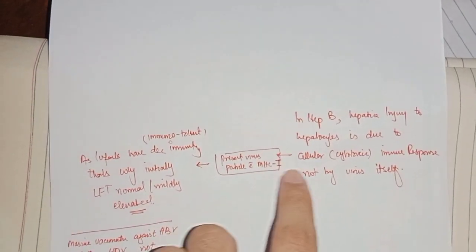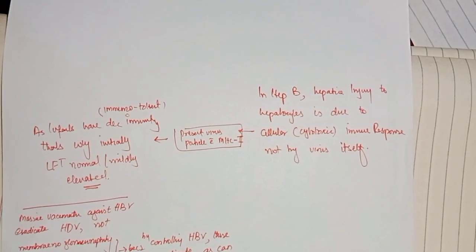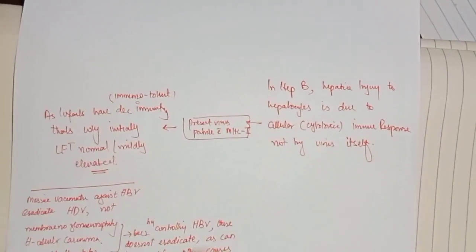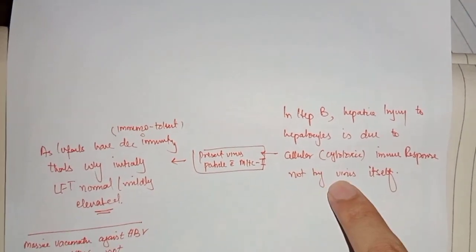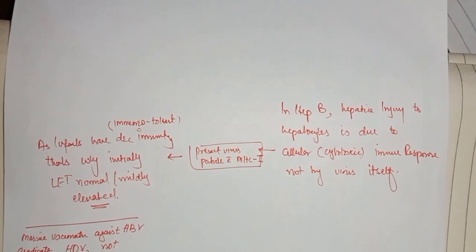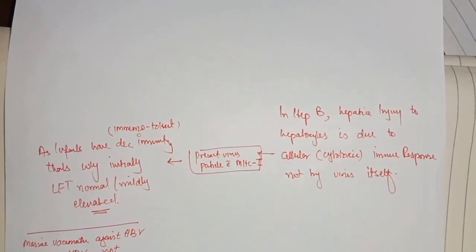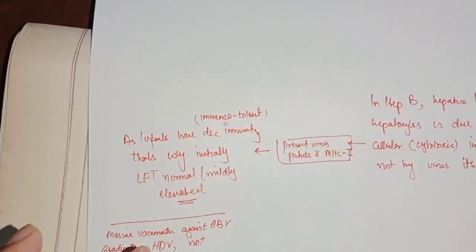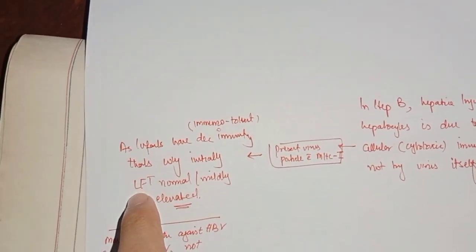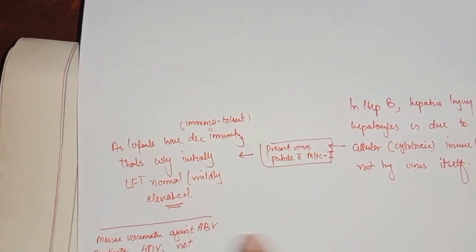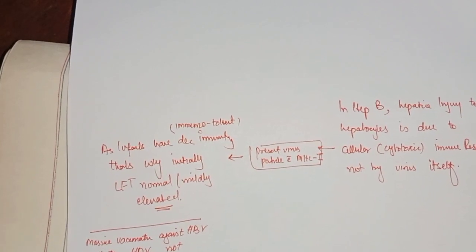Let's discuss another core concept — what happens in vertical transmission. If an infant is born to a hepatitis B positive mother, what will the viral profile be? In hepatitis B, hepatocyte injury is due to the cellular cytotoxic immune response — not by the virus itself. The virus keeps replicating inside the hepatocytes without damaging them; it is the T cells that detect the virus, attack and rupture the cell, causing release of viral markers and hepatic enzymes. When an infant is born, the immune response is not strong and there are no mature T cells. As a result, there is not a lot of hepatocyte rupture in the infant — so initially the infant will have normal or only mildly elevated LFTs. This is a key concept: a baby born to a hepatitis B positive mother with normal LFTs does not mean the baby lacks hepatitis B. The baby may have hepatitis B but show low LFTs due to a decreased immune response.